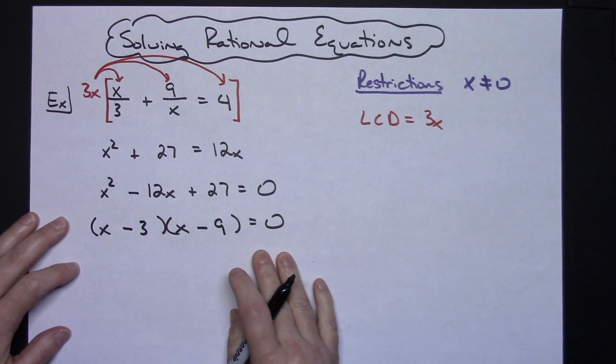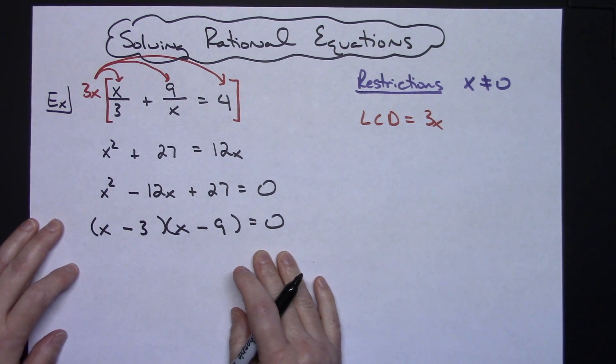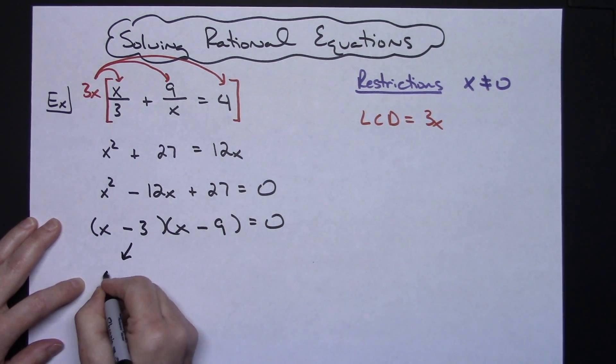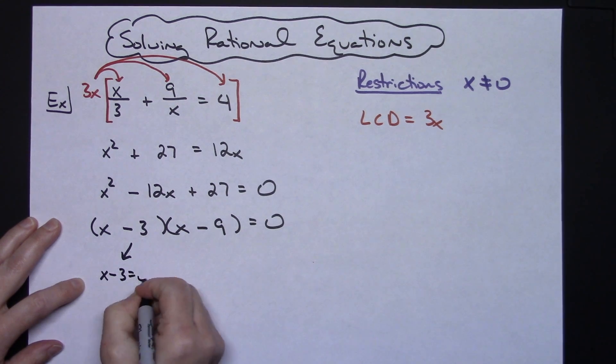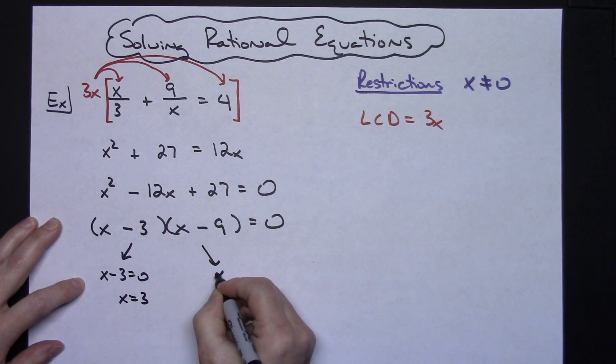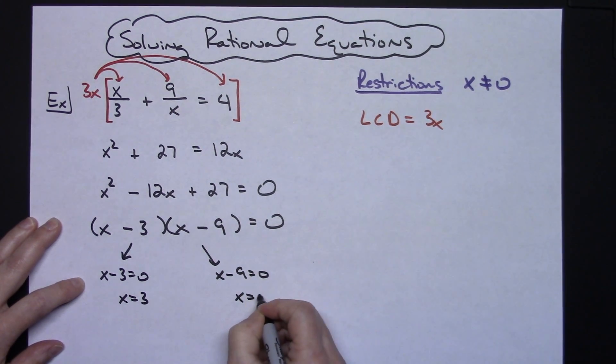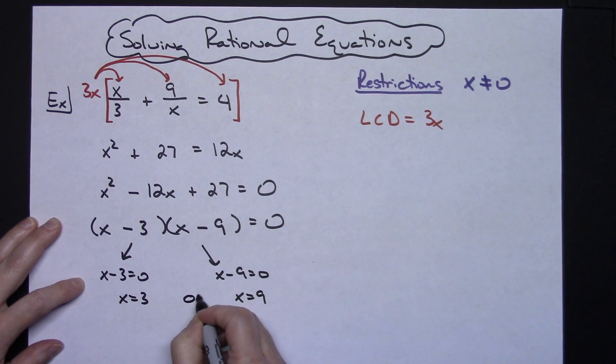At this point you're going to use the zero property principle here which says basically I can set this equal to zero and solve so x is going to equal three, or I can set this one equal to zero and x is going to equal nine.